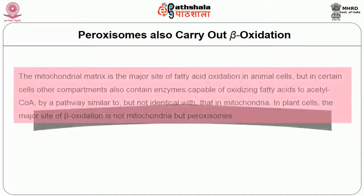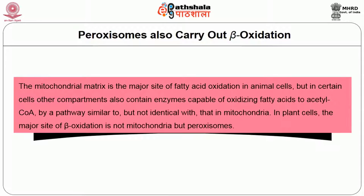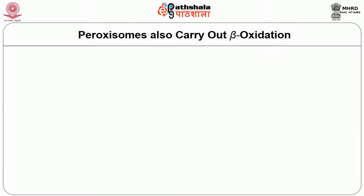Peroxisomes also carry out beta oxidation. The mitochondrial matrix is the major site of fatty acid oxidation in animal cells, but in certain cells other compartments also contain enzymes capable of oxidizing fatty acids to acetyl-CoA by a pathway similar to but not identical with that in the mitochondria. In plant cells, the major site of beta oxidation is not mitochondria but peroxisomes.